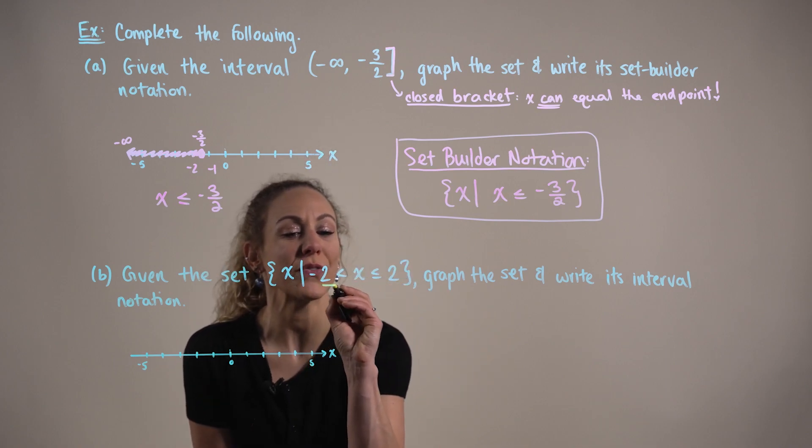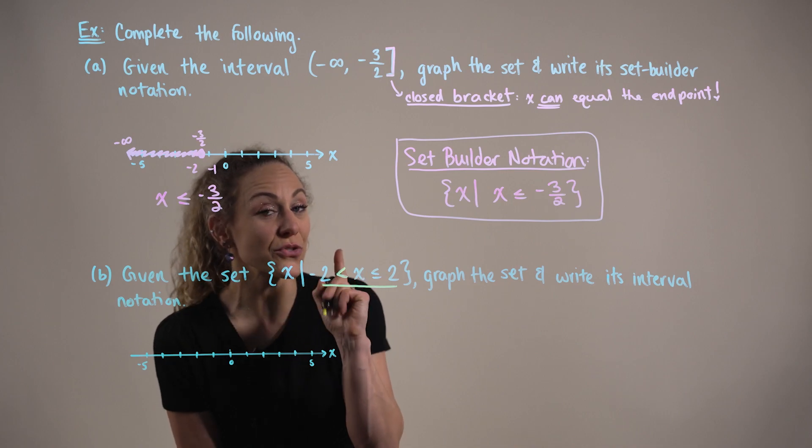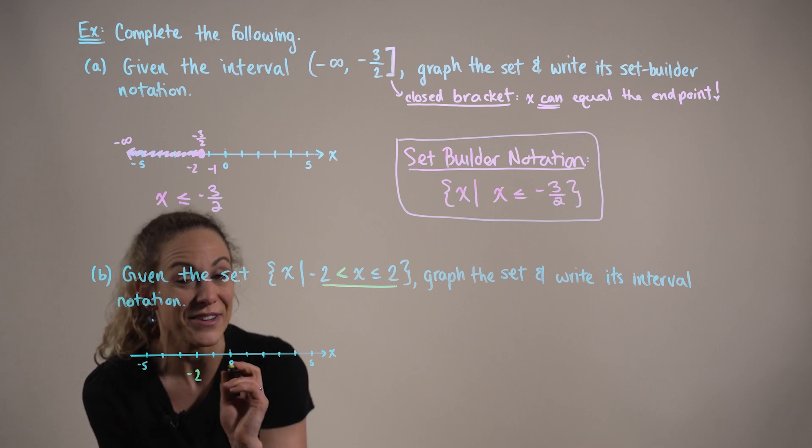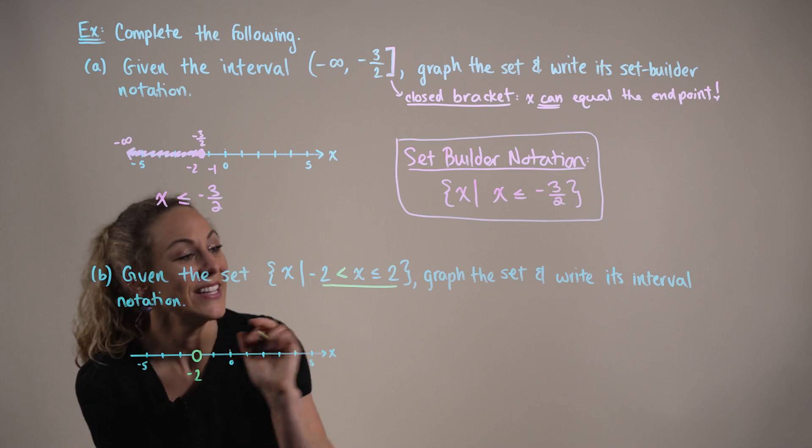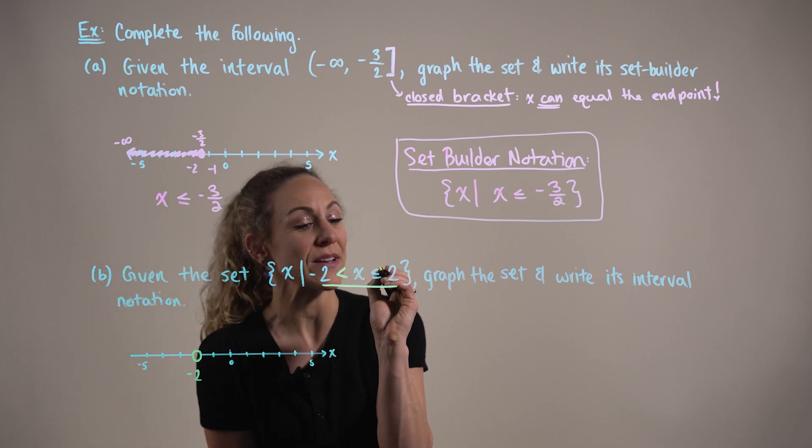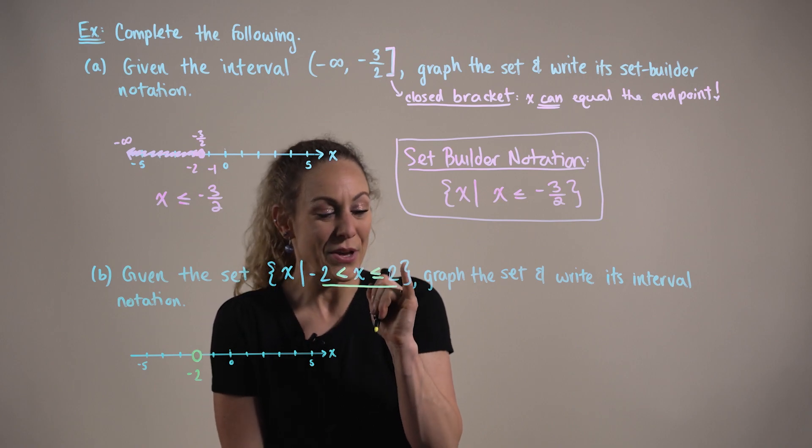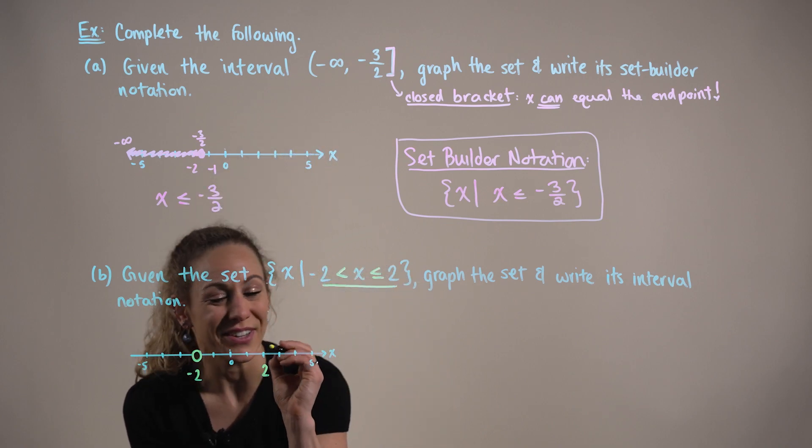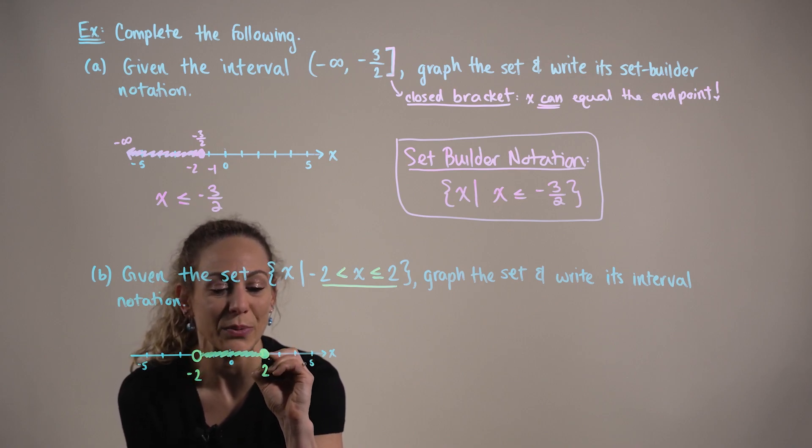Making a special note of our inequality, we can observe here that x is going to be strictly greater than negative two, implying that at this value on the number line, we'll have an open circle or open dot. And then x can also be or is less than or equal to positive two, which implies that at positive two on the graph, we'll have a closed circle. And then x can be all of the values in between.